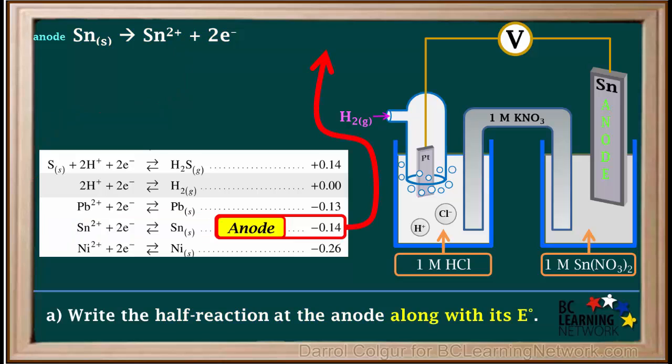Also, because the equation was reversed, the sign on the E° must be switched. So the E° for this half reaction is positive 0.14 volts. This is the oxidation potential of tin metal.